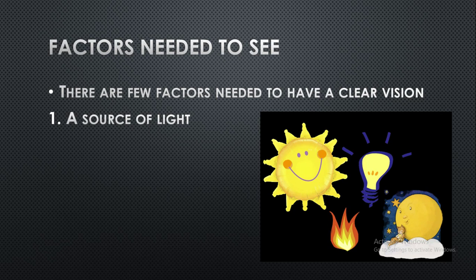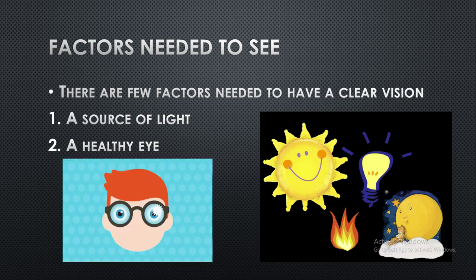The second factor is a healthy eye. Even though there is a source of light, if you have an unhealthy eye, you can't see things clearly. Therefore we require a healthy eye in order to have a clear vision. So a source of light and a healthy eye are the two main factors required for clear vision.